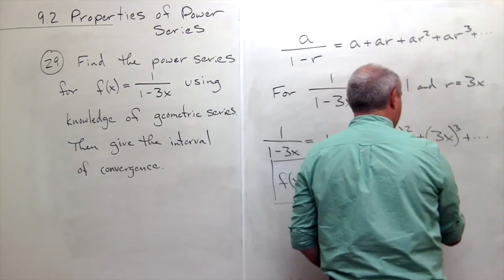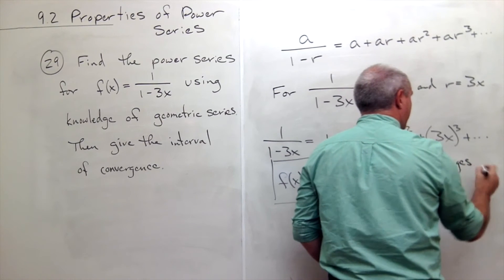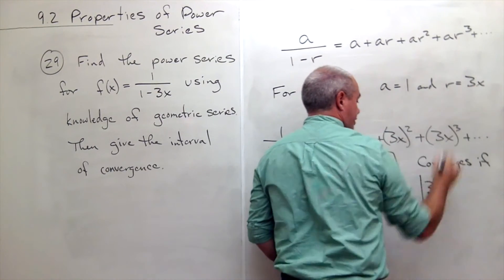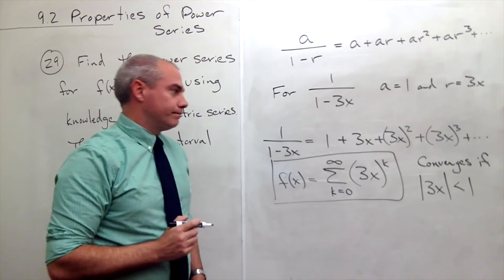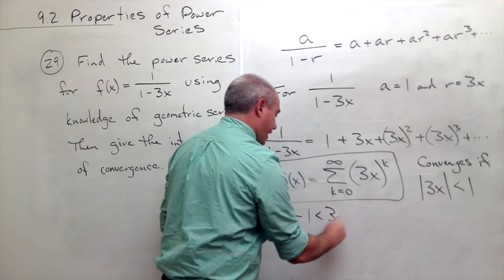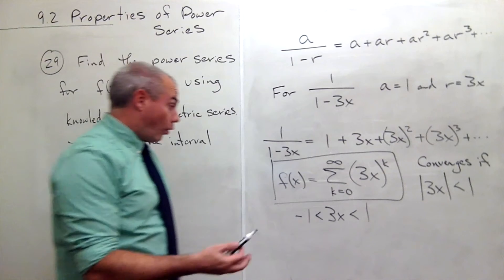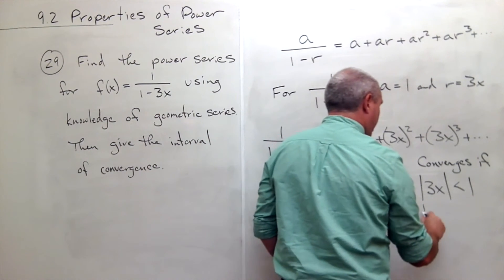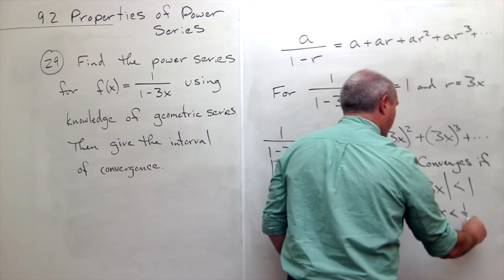So this thing will converge if the absolute value of r which is 3x is less than 1. In other words, -1 needs to be less than 3x needs to be less than 1. Or, another way of saying that is -1/3 needs to be less than x needs to be less than 1/3.